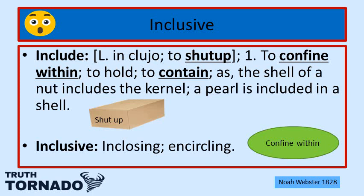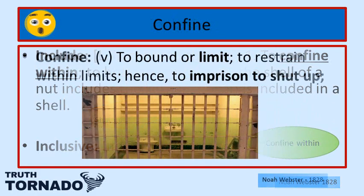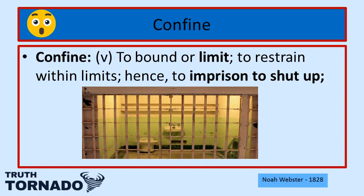Inclusive means enclosing, which means to be fenced around or encircling — think of something confined within. Confine as a verb means to bound or limit, to restrain within limits, hence to imprison, to shut up. An example would be a prison cell. All of these definitions came from Noah Webster's 1828 Dictionary.